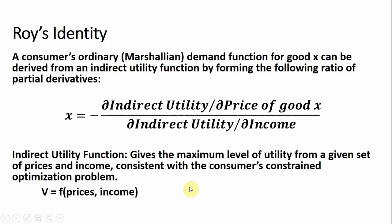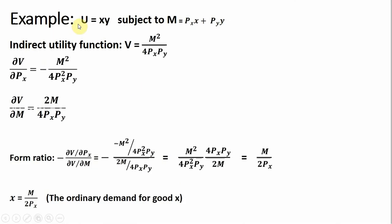Let's do an example. I'm going to use this direct utility function as my example, where utility is a function of x times y, subject to the budget constraint where income equals the price of good x times units of good x plus the price of good y times units of good y. Here is the indirect utility function that falls out of this utility function above. If you're not sure how to derive an indirect utility function, I have a link in the description of this video below.